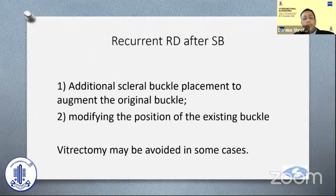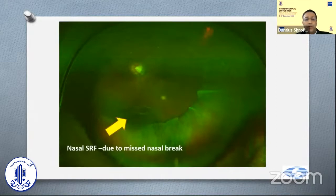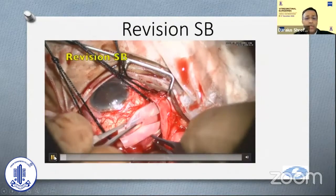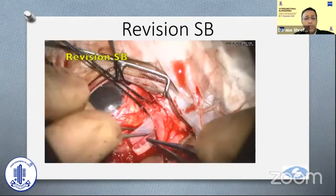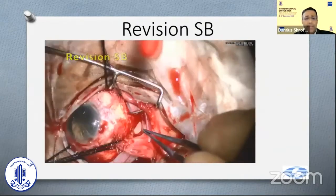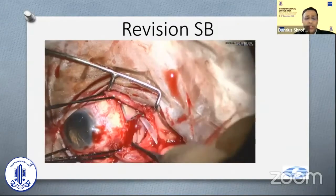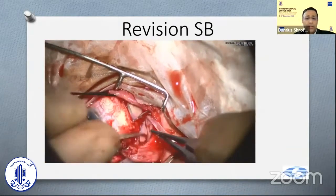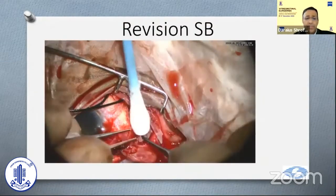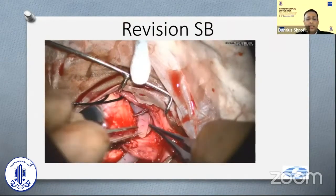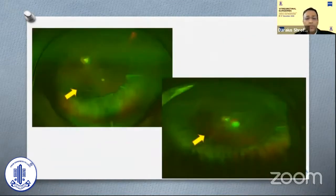Recurrent RD after buckle — addition of a buckle element. Aditya said buckle has become very rare, but we are still a little old-fashioned and still do it quite often. This is a phakic patient, 47 years old. After buckling, you can see the buckle effect but there was still some nasal fluid. We didn't want to do a vitrectomy or touch the lens, so we did a revision buckle where a new buckle element was added in the nasal quadrant, covering a missed break located superior nasally. You can see the post-op Optos picture with a well-attached retina and restoration of vision.